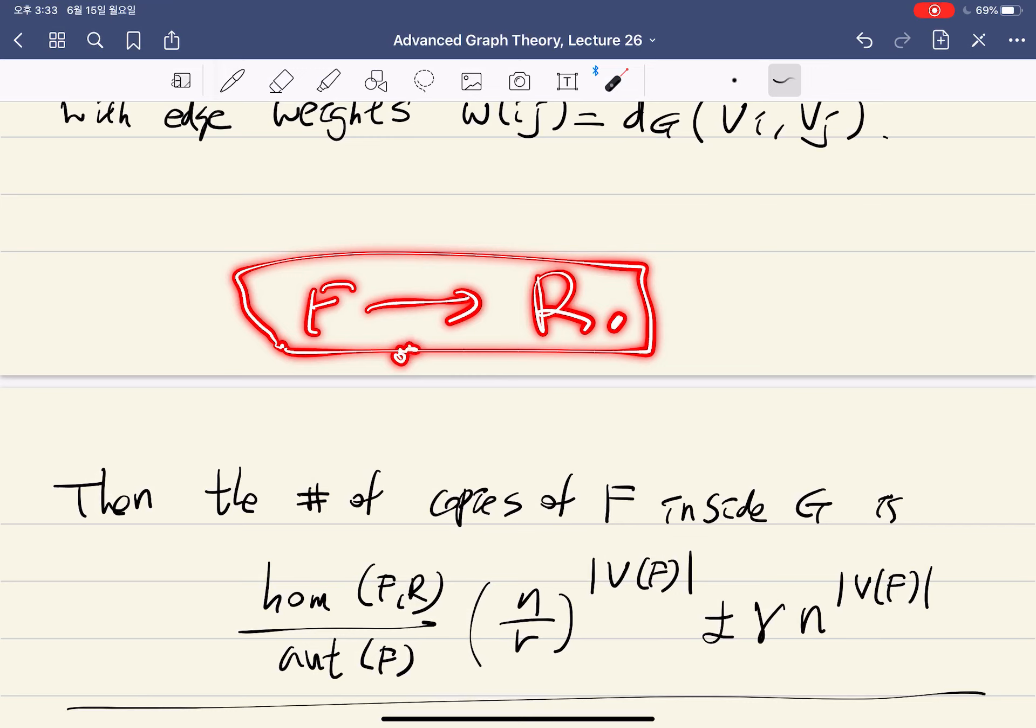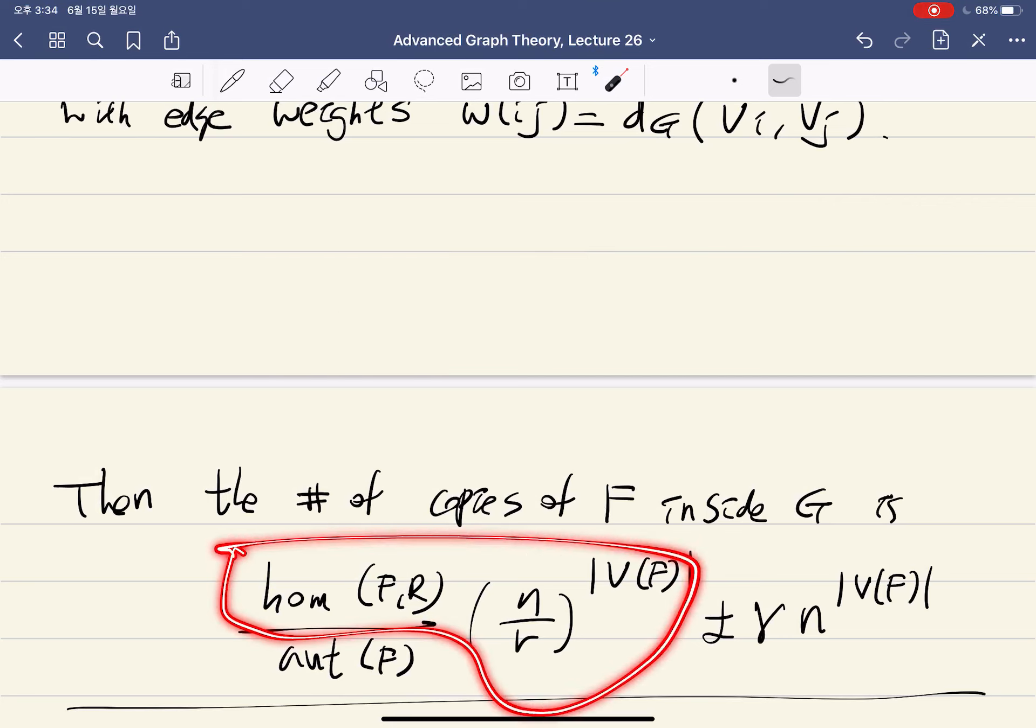With a bit more care, you essentially have to do something similar to the embedding lemma, what you did in the embedding lemma but in a more precise way, and then you count all the copies and divide by the multiple counting.